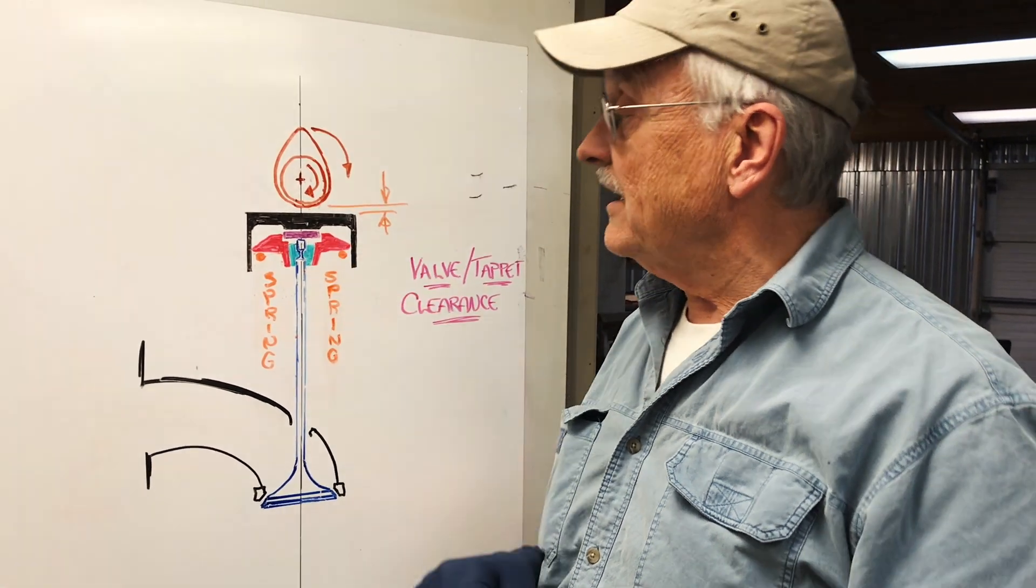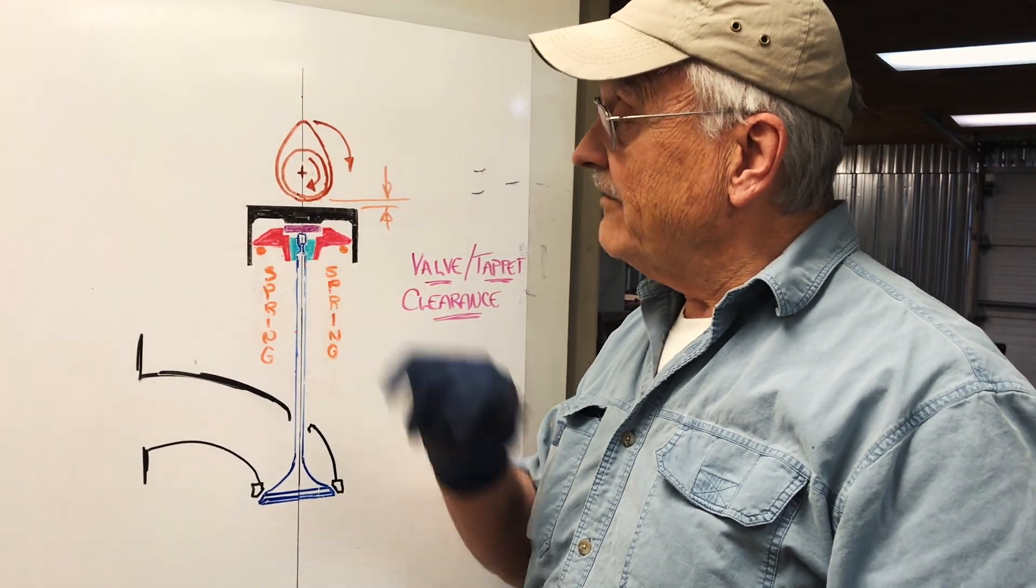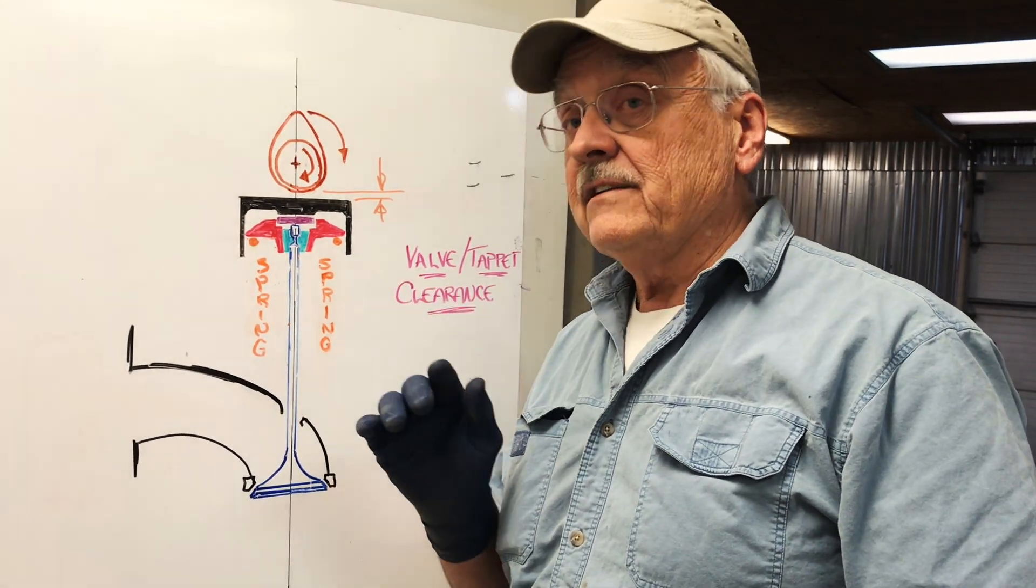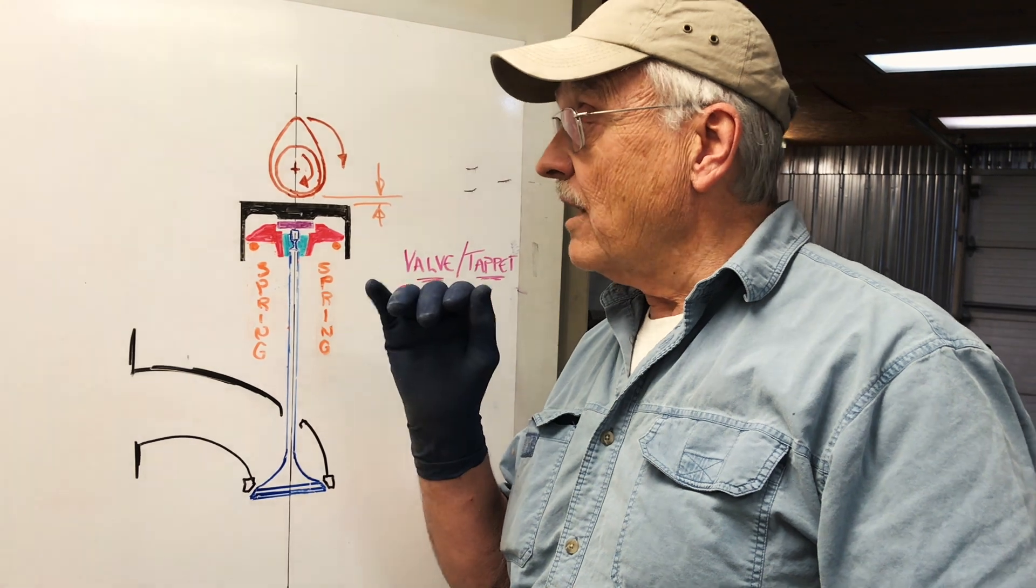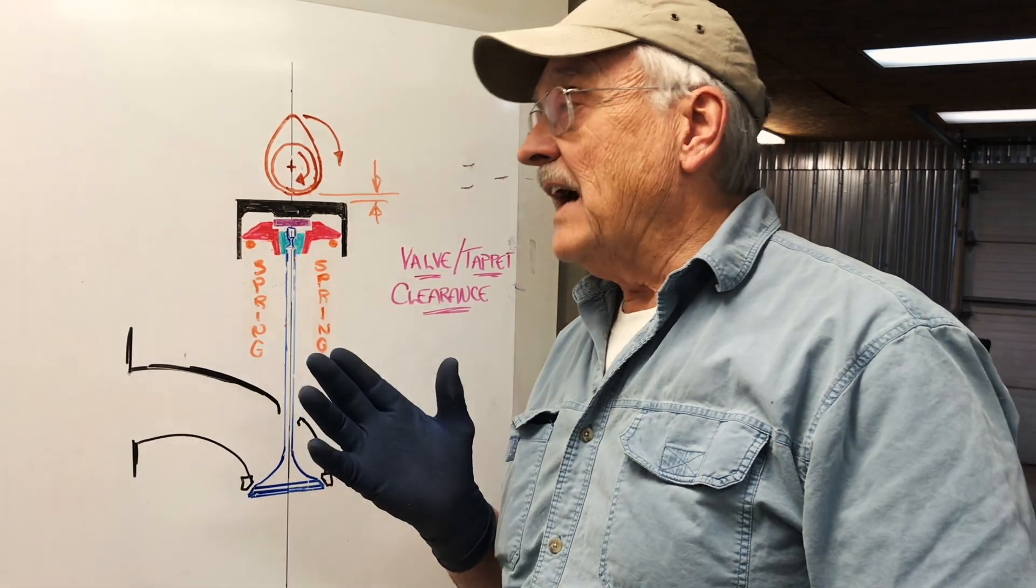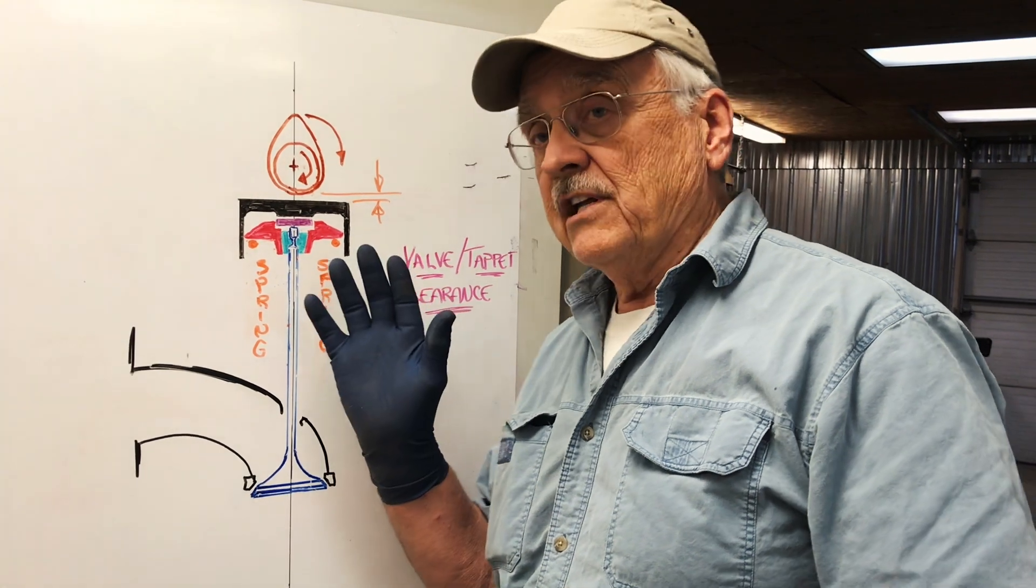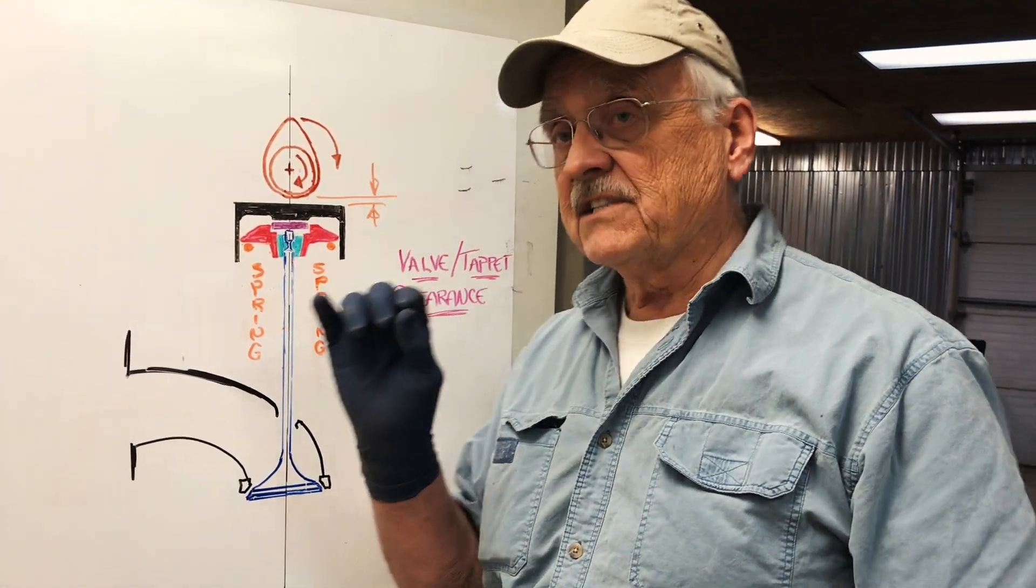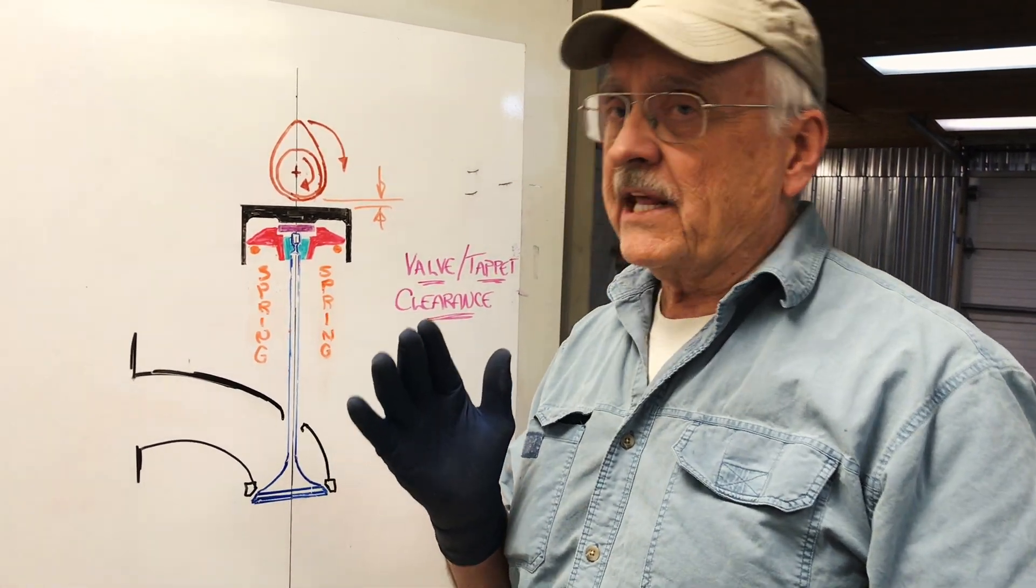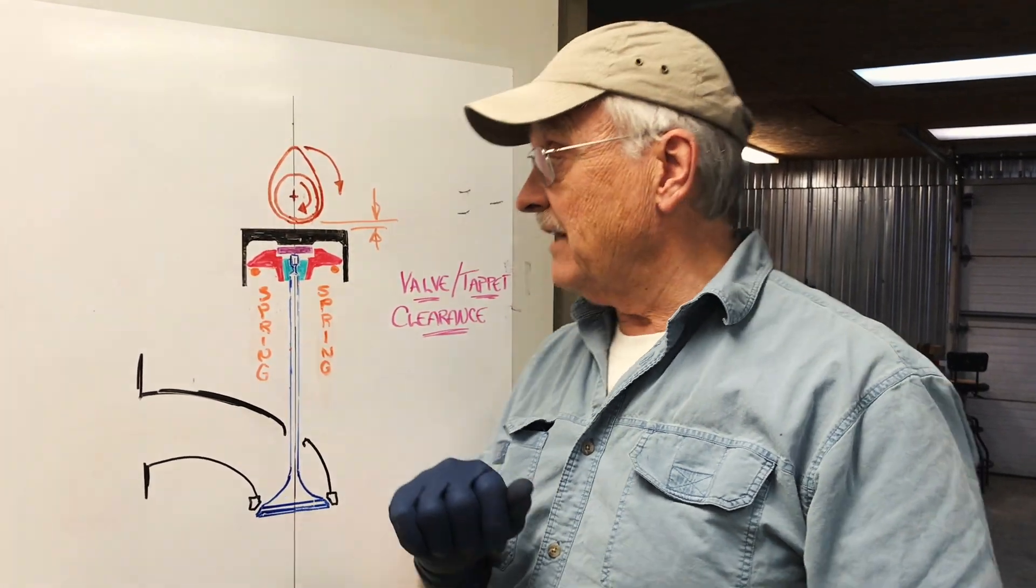The problem arises when you start grinding the end of that valve stem off in order to open up the clearance. The problem with that is the end of that valve stem is hardened. If you grind the end of it, you're going to remove that hardening. Jaguar absolutely forbids you grinding the end of those valve stems. I've had some knowledgeable people say you can remove a few thousandths and it won't be an issue—the hardened surface is thicker than just a few thousandths of an inch. But when asked how much can be removed, I've never been able to get a good solid answer. So the end of that valve stem best be left alone.